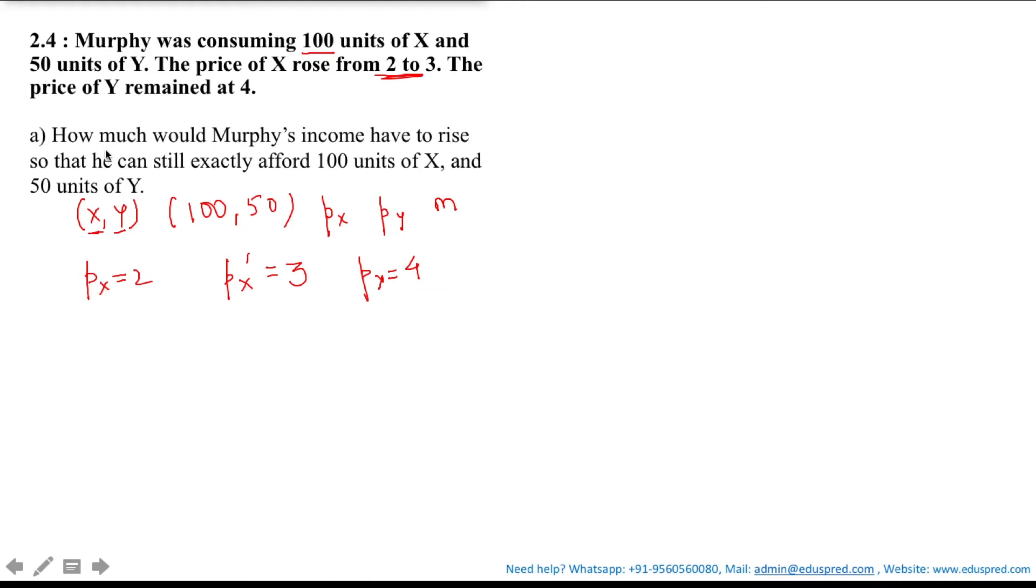Now we have to find the change in the income. So let M represents the initial income and M dash represents the new income so that he can still have 100 units of X and 50 units of Y at the new prices. The result of M prime minus M is your answer.